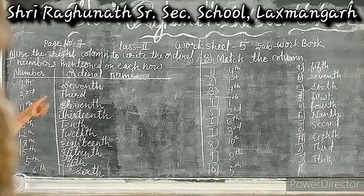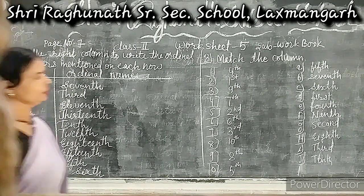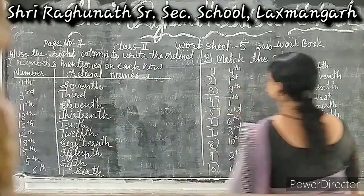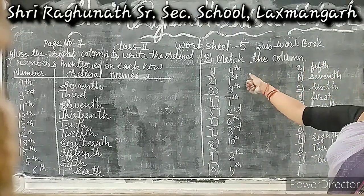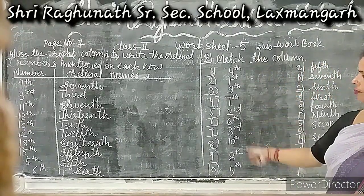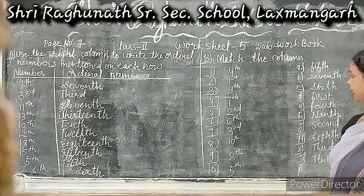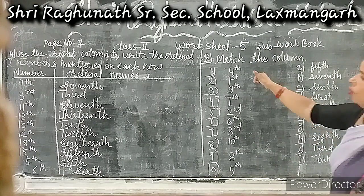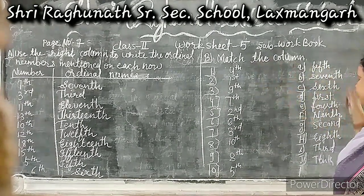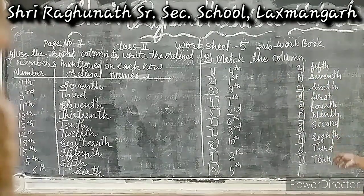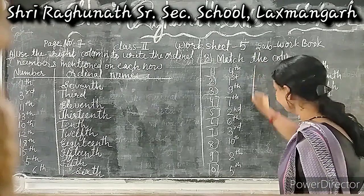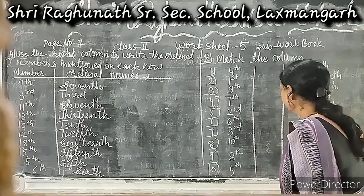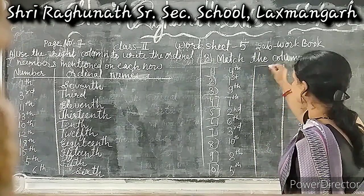6th — S-I-X-T-H. This is how the ordinal name is written. The second question is the match column. On one side there are ordinal numbers, and on the other side there are ordinal names. We have two columns and you can choose the numbers.